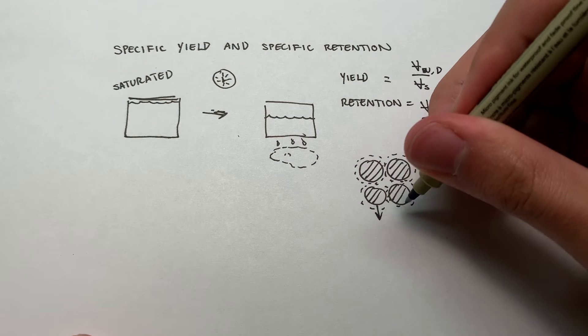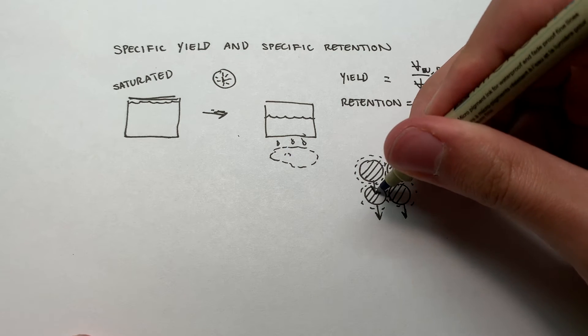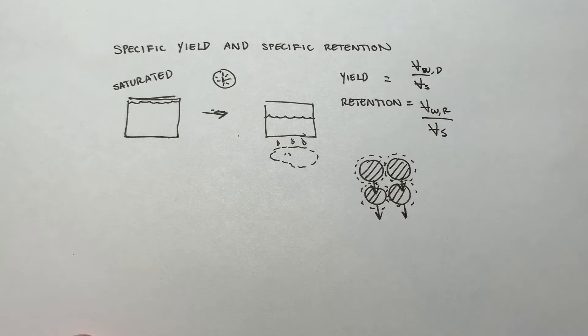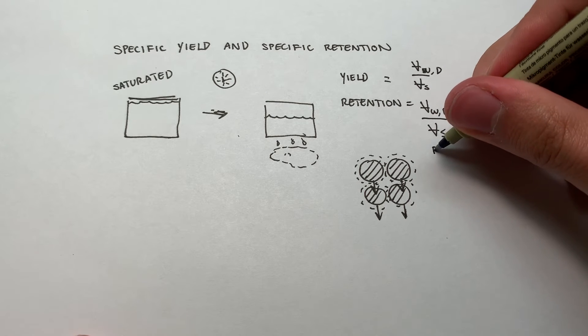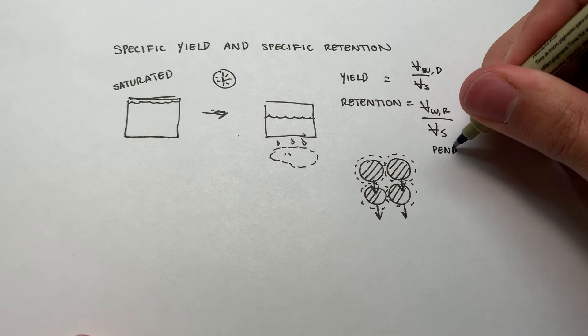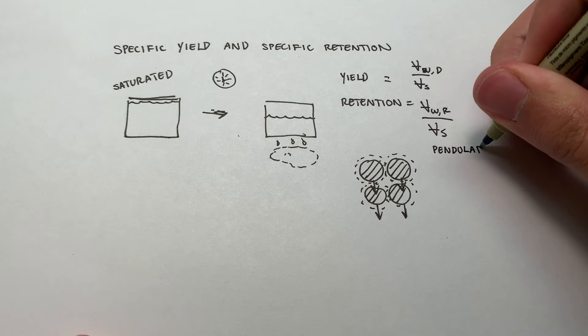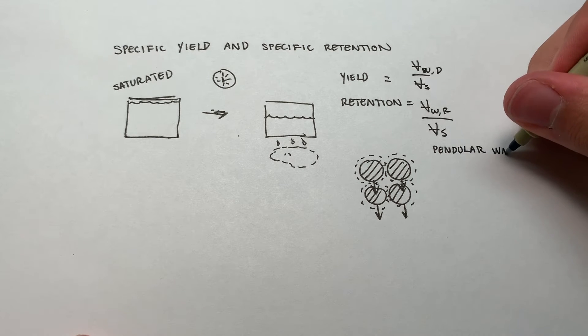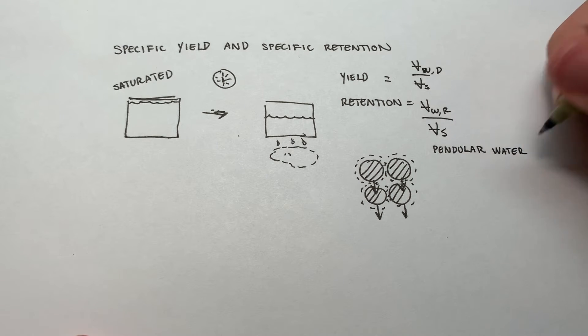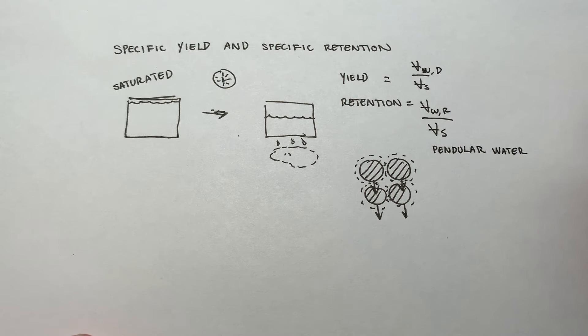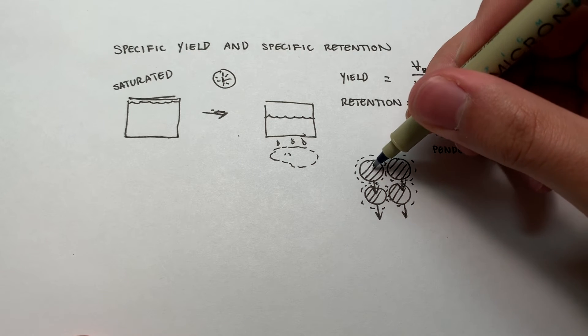And you've got gravity acting on each of these water droplets. I'll mention also, this is just fun fact and kind of a little bit of vocabulary here. The water that's retained, that's held here is called pendular water. Pendular water, good term to know. And it's held up there by the surface tension, the surface tension between the water and the grain.